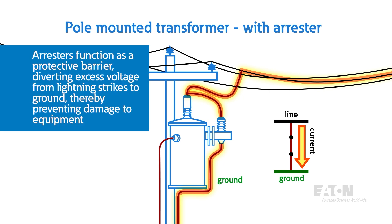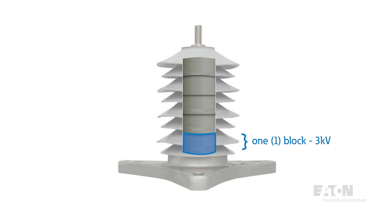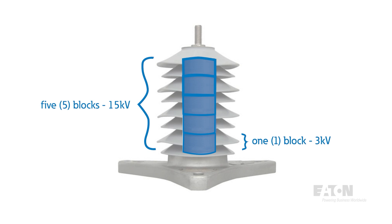Thus, arrestors act like a trapdoor, preventing the lightning strike from damaging equipment by shunting excess energy to ground. MOVs can be found in every surge protection device, like the ones in your home. But since utilities are working with voltages typically above 7,000 volts, the MOVs used in arrestors are much larger. Each block is usually designed to be around 3 kV and then they stack together to form higher voltage ratings.